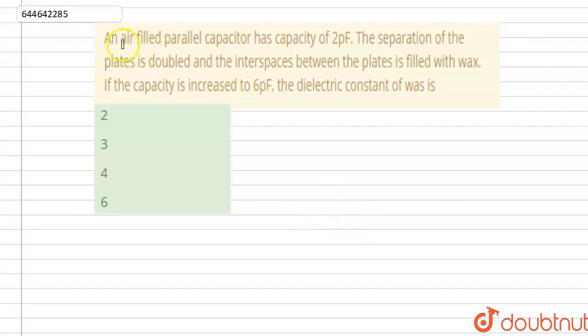The question says an air-filled parallel plate capacitor has a capacity of 2 picofarads. The separation of the plates is doubled and the interspace between the plates is filled with wax. If the capacity is increased to 6 picofarads, find the dielectric constant of wax.